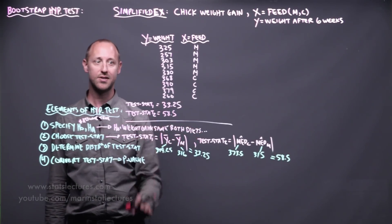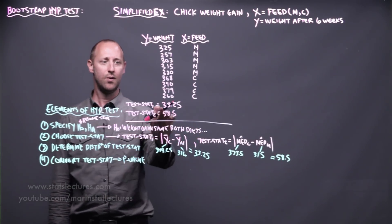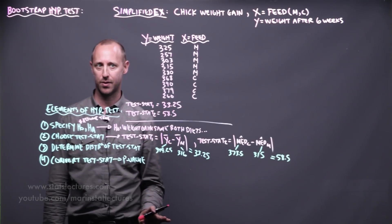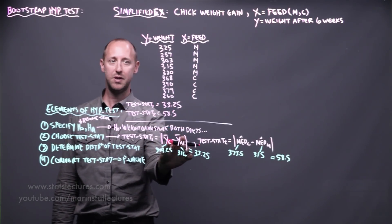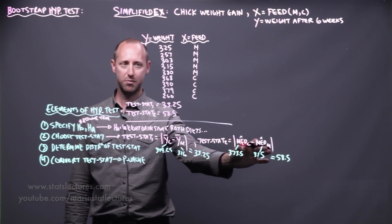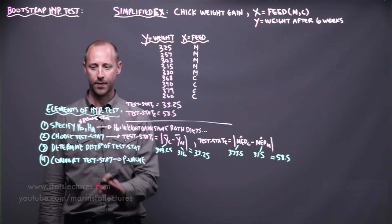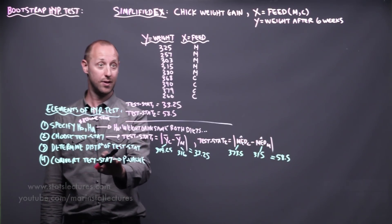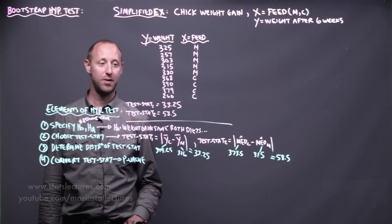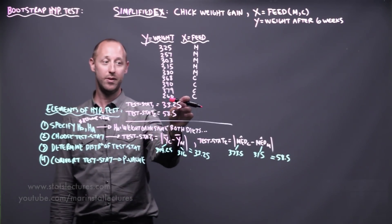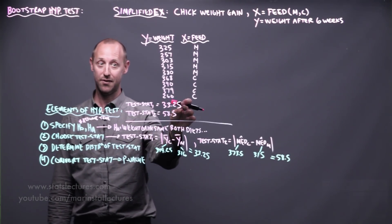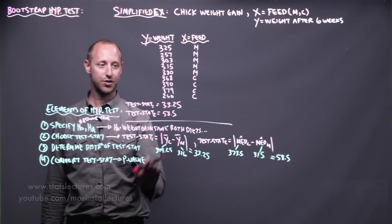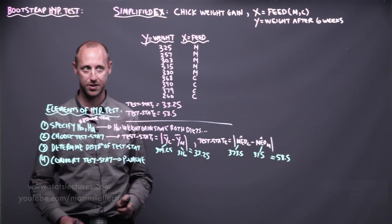If our null hypothesis is true — if the weight gain on these two diets is the same — we expect either of these test statistics to come out to be roughly zero. The difference in means or the difference in medians should be about zero. So we're going to work toward calculating a p-value that tells us the probability of seeing a difference this large or even larger if our null is true.